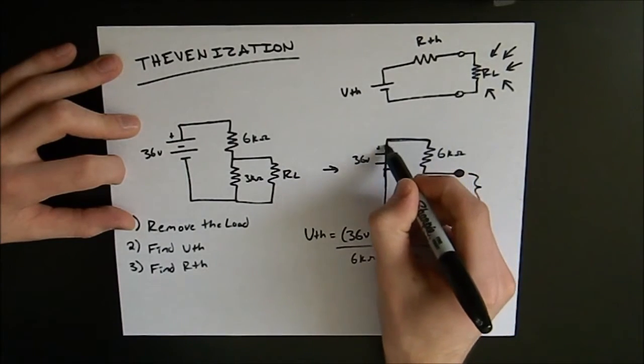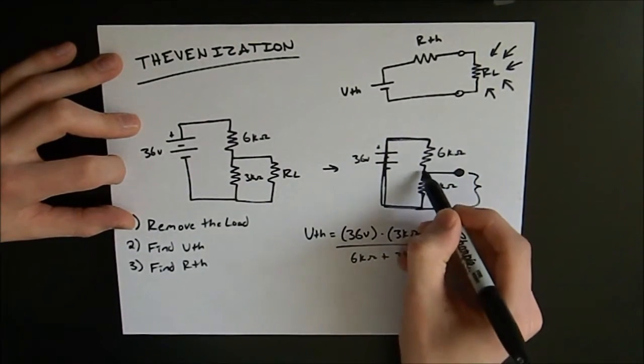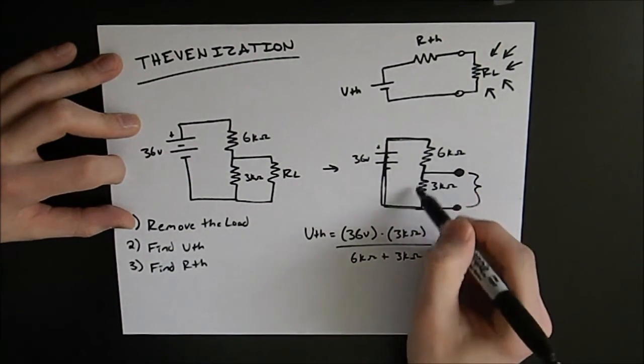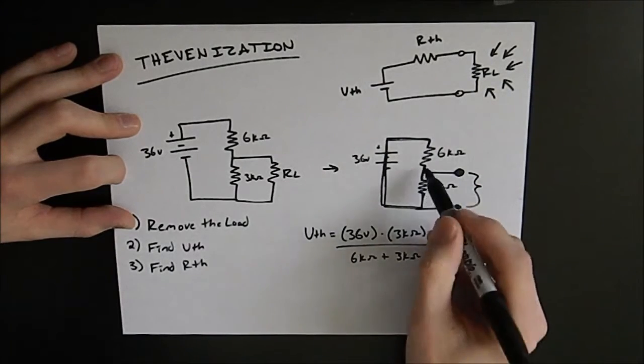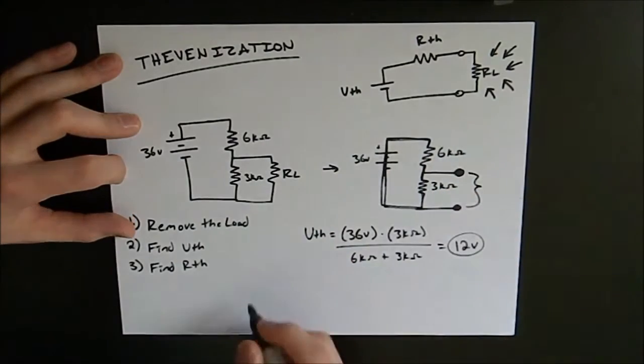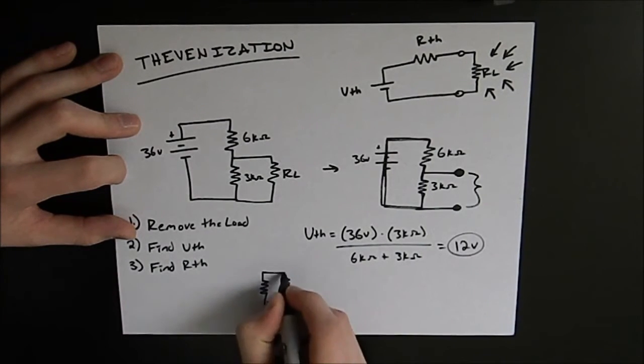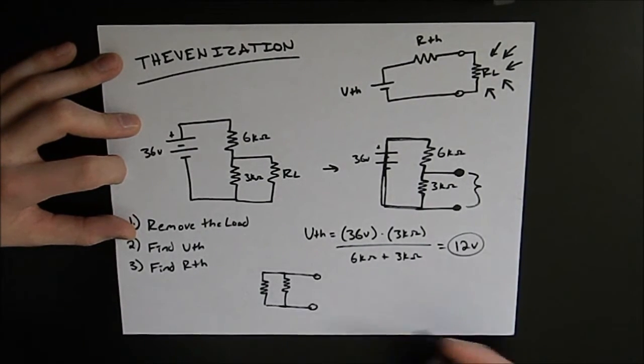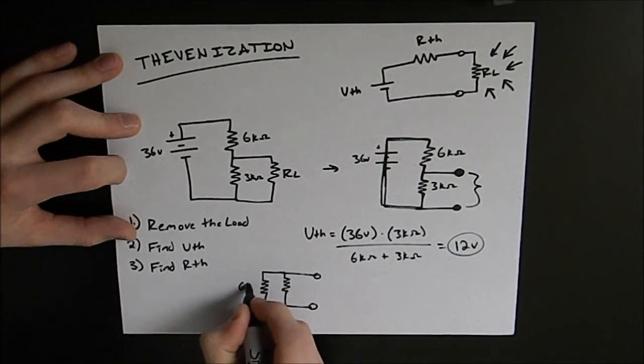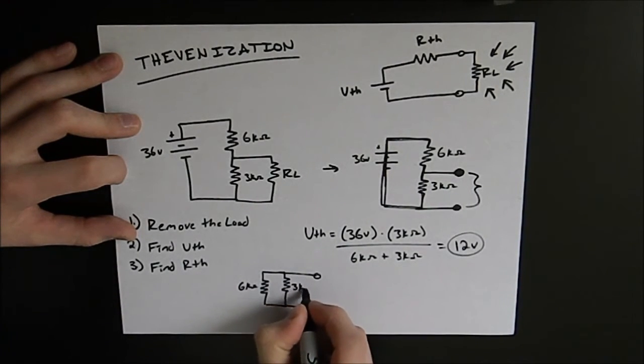Now if you observe these resistors are connected on both ends. While they look like they're in series they're actually in parallel once we short this out. So to redraw that we find that our circuit now looks like this. The 6 kiloohms here and 3 kiloohms here.